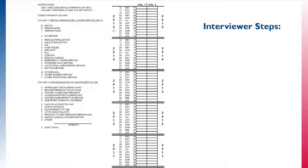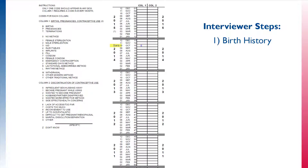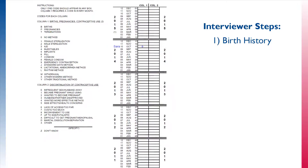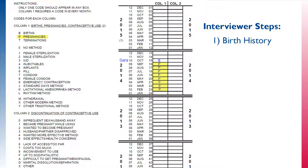There is an order that is followed when filling out the calendar, and the interviewer works through a series of steps. First, after the birth history in the questionnaire is completed, the interviewer will fill in the births that occurred during the calendar period by writing a B in column 1 for the month of the birth. They will also fill in the child's name next to the month of the birth and then ask the respondent how many months she had been pregnant. For each month the respondent was pregnant, the interviewer will work backwards from the month of birth and place a P in column 1 for each month of pregnancy.